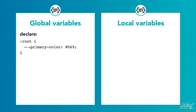When we create a global variable, we need to start by declaring it. We do this by using `:root`, then we put the variable name and assign the value. In this case, I've created a variable called `primary-color` and I'm assigning a value of `#069`. This variable can now be used in any part of the stylesheet by referencing `primary-color`.